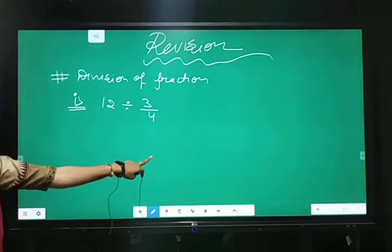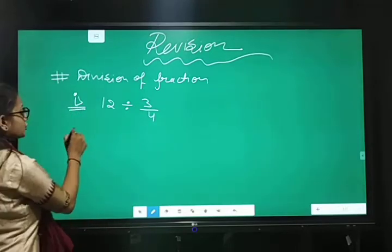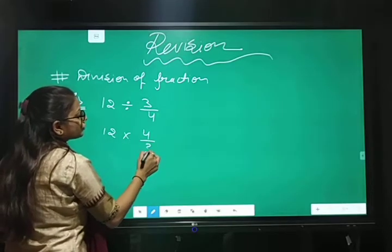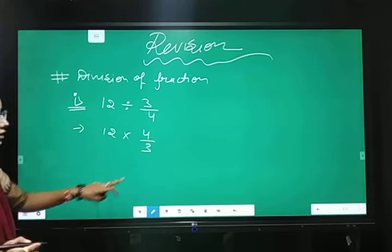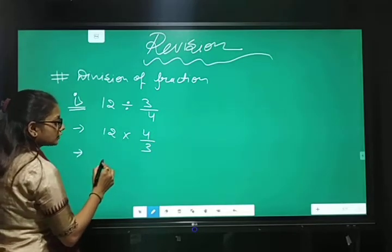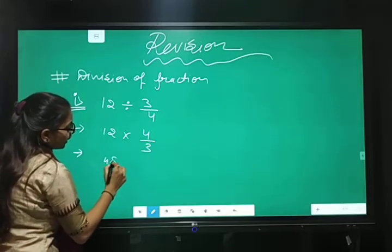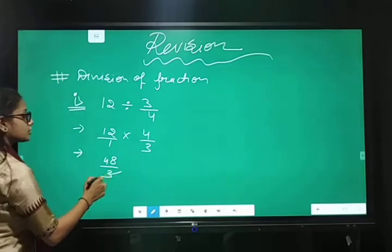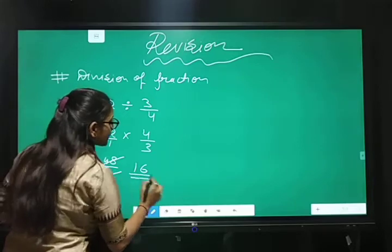First example is 12 divided by 3 upon 4. We know that reciprocal of second fraction and sign will be changed. So, first step is 4 upon 3. Reciprocal the second fraction. 12 fours are 48 and 3 ones are 3. Cancel out hujayega, to answer is 16.